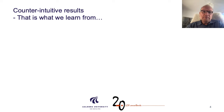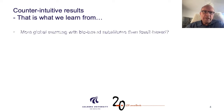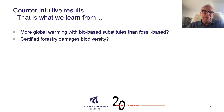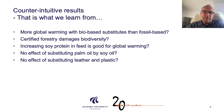If our analysis always came out with the intuitive results, why would we have to do the analysis in the first place? So let's look at some of the controversial, or at least counterintuitive, results that you can get with consequential modeling.